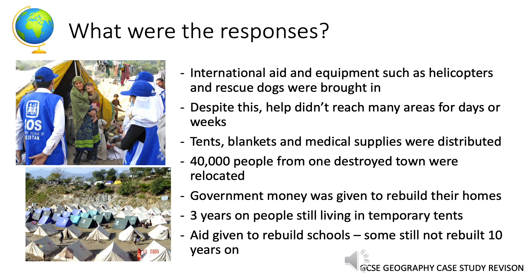There were numerous responses to this earthquake. Pakistan heavily relied on international aid so that equipment such as helicopters and rescue dogs could be brought in. Despite this, help didn't reach certain areas for days or weeks — in particular the rural areas where landslides blocked roads, making it difficult to provide people with emergency aid.